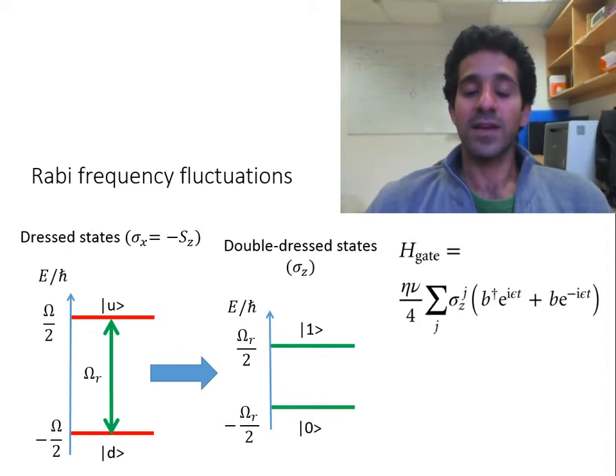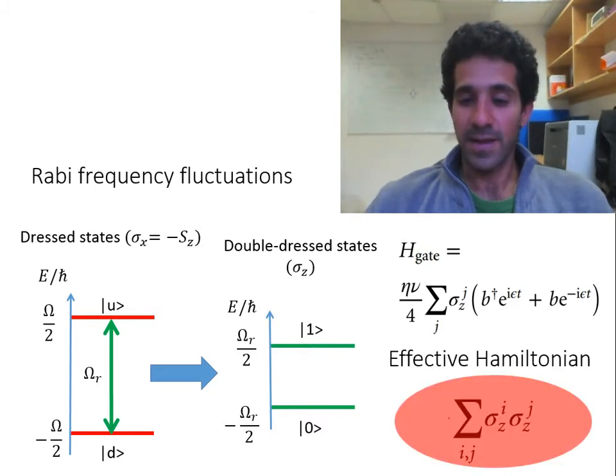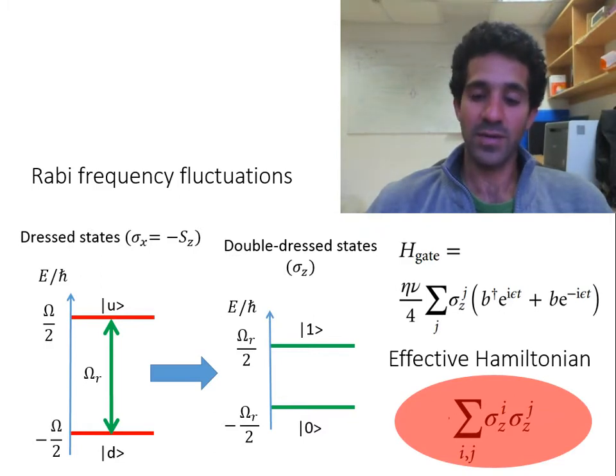Now, the red sideband Hamiltonian becomes our gate Hamiltonian, and this effectively gives us the geometric phase gate Hamiltonian, or the Mølmer-Sørensen Hamiltonian.